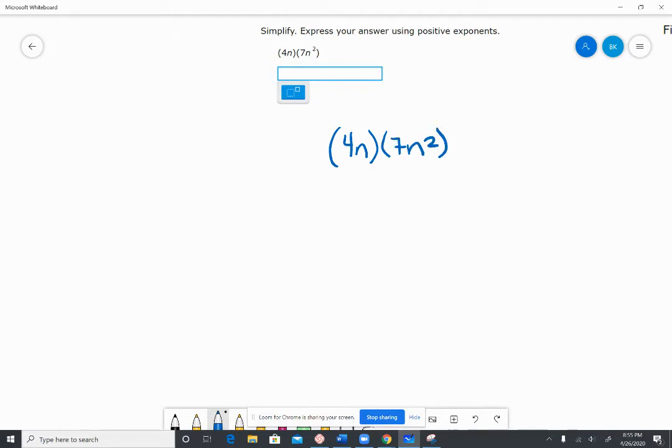So the first thing we're going to multiply together is going to be the four times the seven, which is 28.